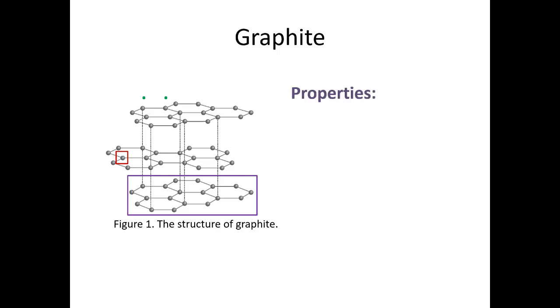The properties of graphite are related to its structures. Graphite has high melting point and boiling point because there is strong covalent bonding throughout the layers of carbon atoms. A lot of energy is needed to overcome these strong bonds.